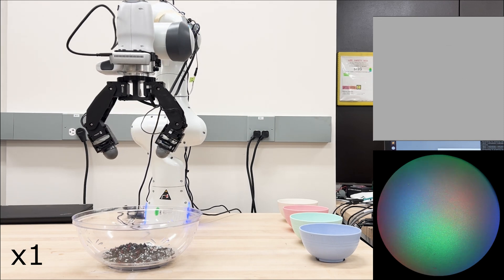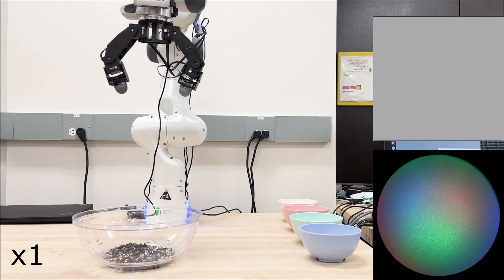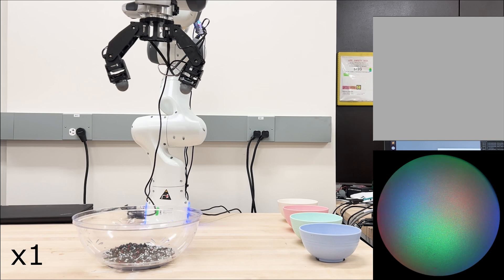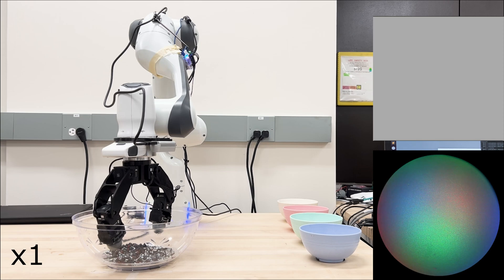Regardless of the classification result, the gripper goes to the initial state once the whole process is done. Now, the gripper starts another process by detecting the highest point among the pile, and then grasps it.